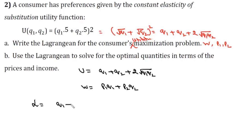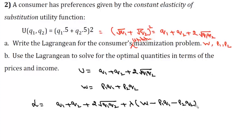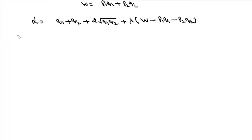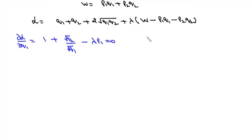The Lagrangian is L = q1 + q2 + 2√(q1·q2) + λ(w − p1·q1 − p2·q2). Finding ∂L/∂q1 = 1 + √q2/√q1 − λ·p1 = 0, so λ·p1 = (√q1 + √q2)/√q1.